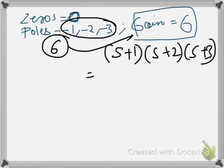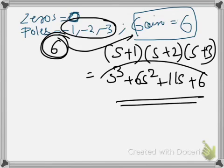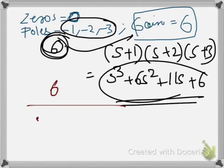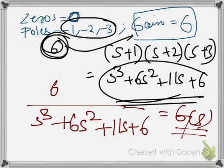If you simplify the denominator you get s cubed plus 6s squared plus 11s plus 6. So 6 is your numerator and s³+6s²+11s+6 is your denominator. The transfer function G(s) is 6 divided by (s³+6s²+11s+6). This is your required transfer function.